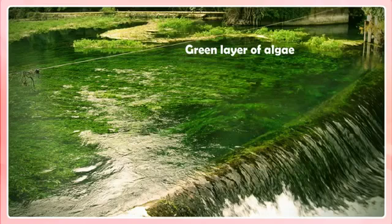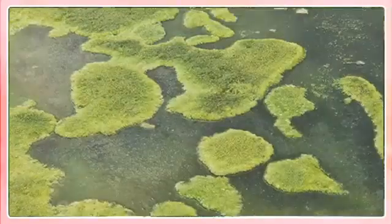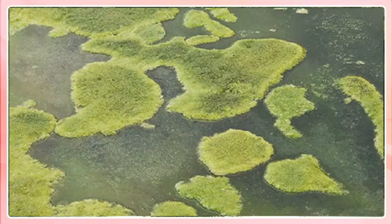Photosynthesis by algae. Many times we have seen patches of slimy green layer floating on the surface of a pond or lake or even in the stagnant parts of a river. Algae are a large group of simple, plant-like organisms. Algae contain chlorophyll and produce food by photosynthesis, just like plants. Algae, however, differ from plants because they do not have proper roots, stems and leaves.